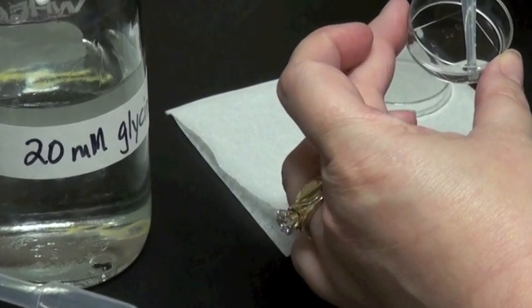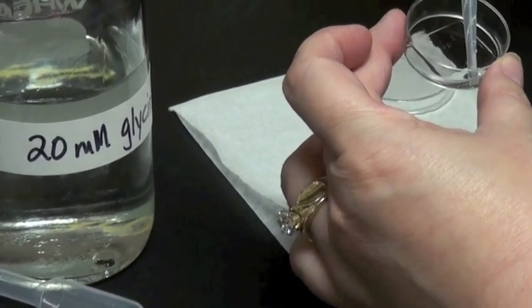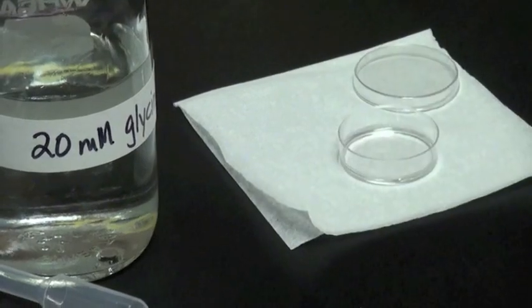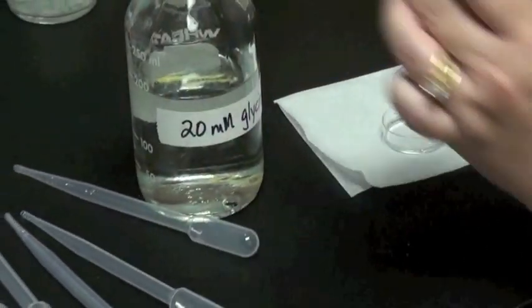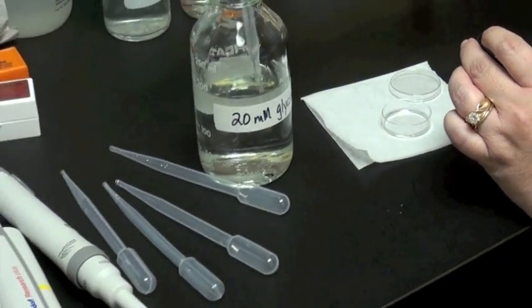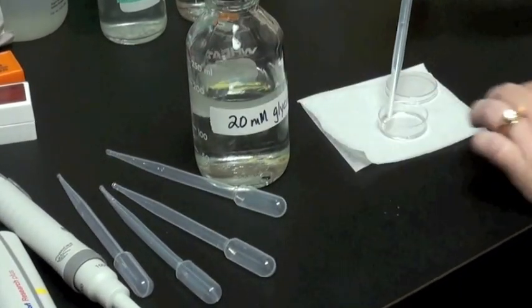In this case I'm using 0.1% Triton X-100 in a 1X PBS solution. I'll add this. Again, I'm expelling the liquid down the side of the petri dish, making sure my cover slip is completely covered.